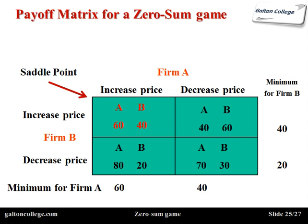This is what's known as a saddle point — a term from mathematics. It's the solution, the equilibrium, the balance. It may require what's known as mixed strategies in some games where it's not as straightforward. I'm not going to get into that here. But for a zero sum game, there will always be a saddle point — there will always be an outcome and always be a solution, though it may sometimes require additional mathematics called mixed strategies.